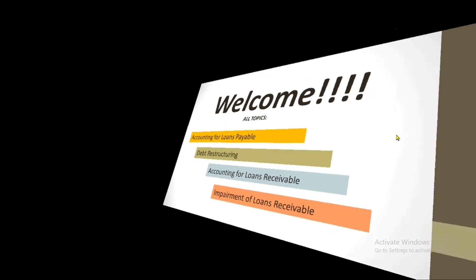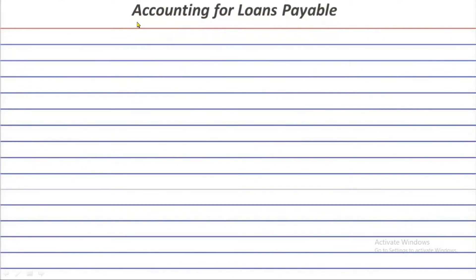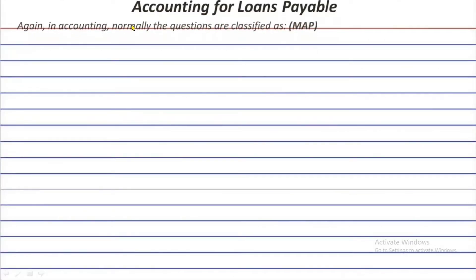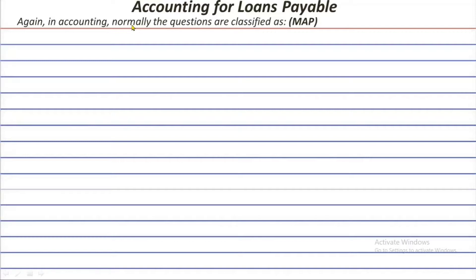For loans payable accounting, in this video we're going to enumerate all the possible questions in this topic and group them according to MAP. MAP stands for: M is for measurement questions, A is for accounting and recording questions, and P is for presentation questions.